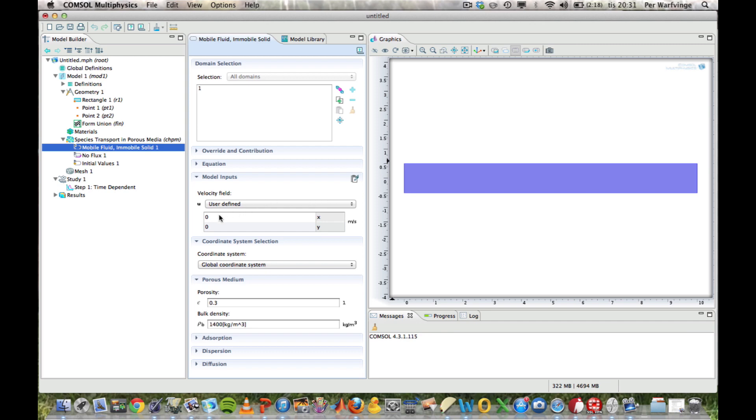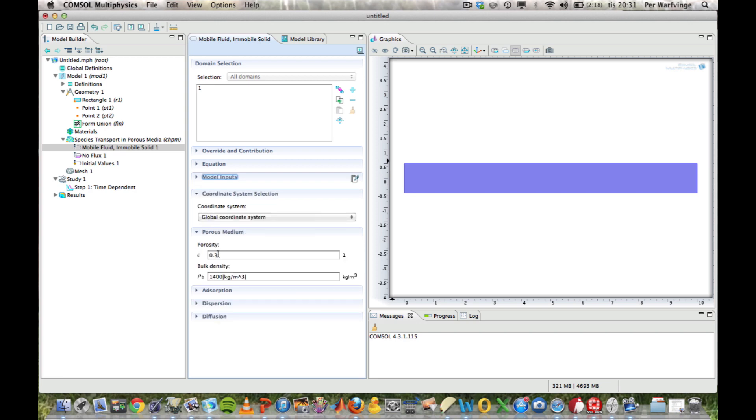The first thing that shows up is the velocity field, u. And we said that the velocity is 1 in the horizontal direction. I will not enter 1 for the vertical direction. Done. Then, we look at the porous medium, and here are some preset values. So, porosity 0.3, I'll change that to 0.4. I'll change the density to 1700. That's done.